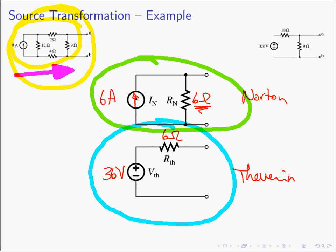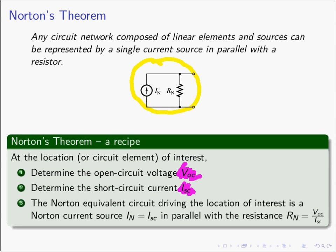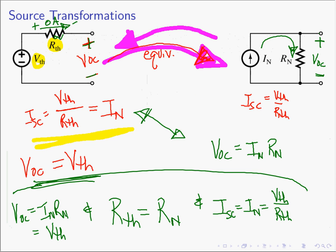All these concepts are interrelated. Norton's Theorem is a very powerful theorem, just like Thevenin's: it allows you to take an arbitrarily complicated network and represent it by a single current source in parallel with a resistor — the dual of Thevenin, which is a single voltage source in series with a resistor. Source transformation is the concept that a Norton source and a Thevenin source can be made equivalent to each other and you can interchange them, transforming from one to the next. Thanks for listening.